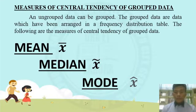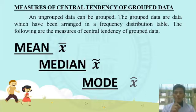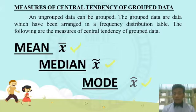An ungrouped data can be grouped. Grouped data are data which have been arranged in a frequency distribution table. The measures of central tendency are the mean, median, and the mode. Please take note of the symbols for the mean, for the median, and for the mode.